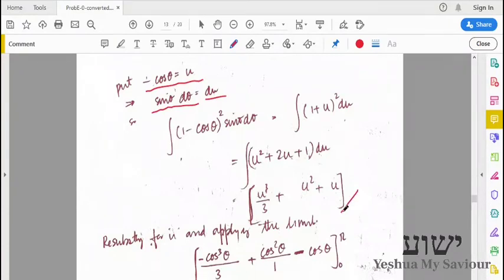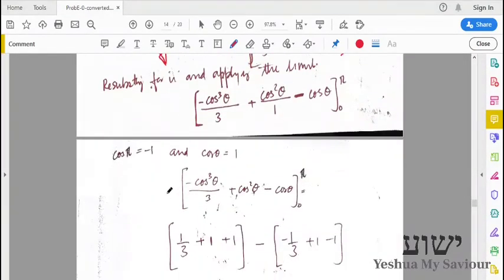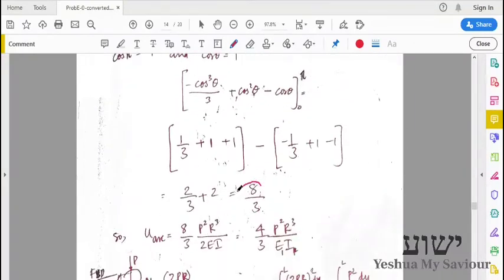We will get this term. We reapply the limits and reapply theta. So we know that cos pi, we apply the limits, cos pi is minus 1 and cos 0 is 1. So just applying the limits we will get 8 by 3.